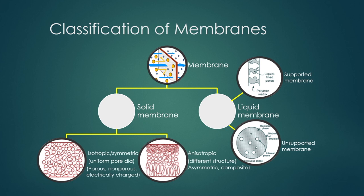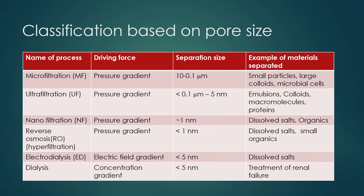Membranes can be classified based on pore size. Microfiltration membranes have a separation size of 0.1 to 10 micrometers. Ultrafiltration membranes have a separation size of 5 nanometers to less than 0.1 micrometers. Nanofiltration membranes separate particles of approximately 1 nanometer in size. Reverse osmosis (or hyperfiltration) membranes separate particles of less than 1 nanometer.